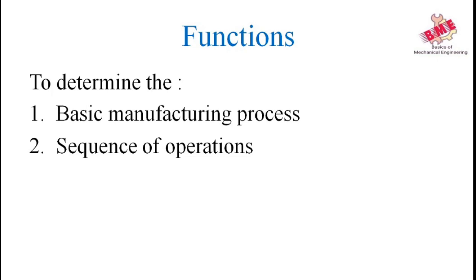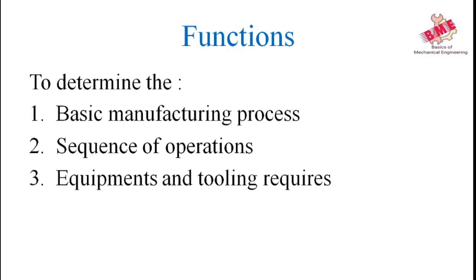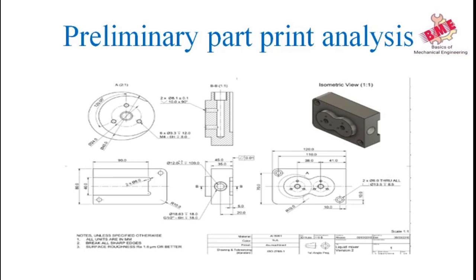The third function is equipment and tooling required for manufacturing the part. To perform the operations, we have to decide the tools and equipment required. The last function is inspection stages — at the time of manufacturing, step-by-step inspection stages are followed for getting an accurate part. For example, after turning we have to check the diameter of the shaft to get the proper diameter. These are the functions of process planning.